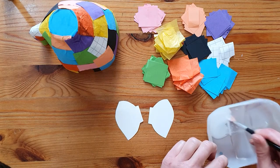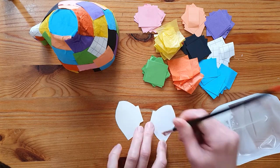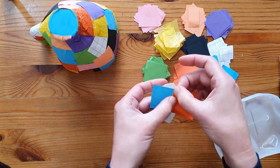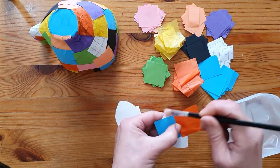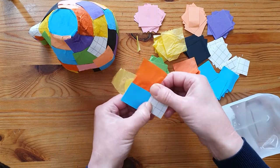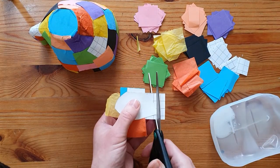Cover one side of each ear with glue and stick on more paper squares. Carefully trim the extra paper off.